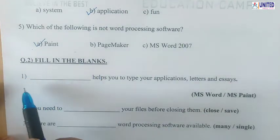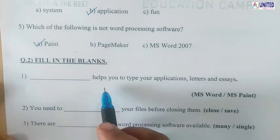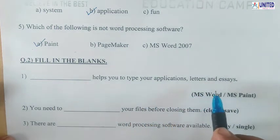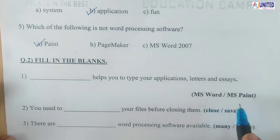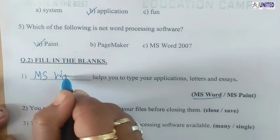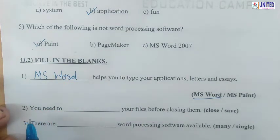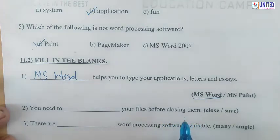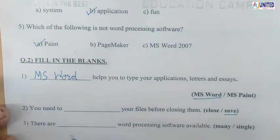Question number 2: Fill in the blanks. Number 1: Blank helps you to type your applications, letters and essays. Is it MS Word or MS Paint? MS Word, because MS Paint is used for drawing. So write down the answer: MS Word. Number 2: You need to blank your files before closing them. Before closing a file, what should you do? Save. So write here: S-A-V-E, Save — meaning store your file.